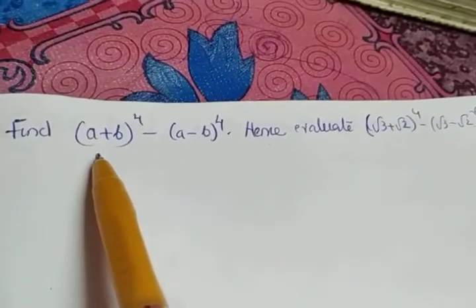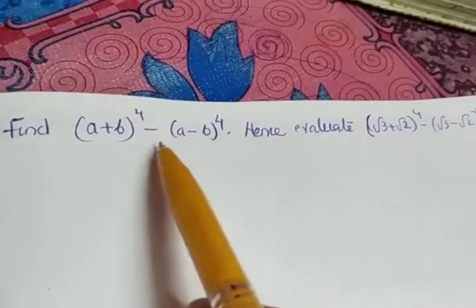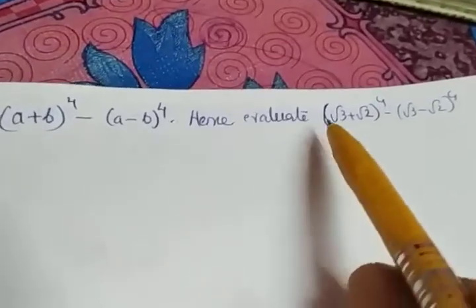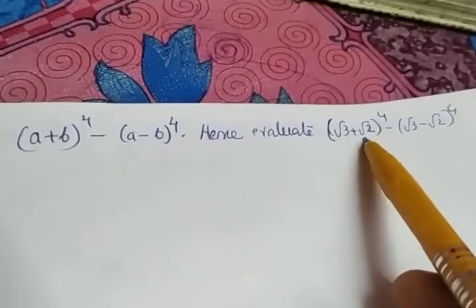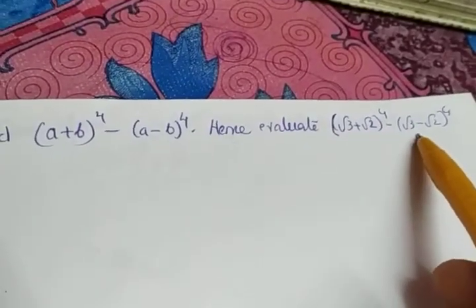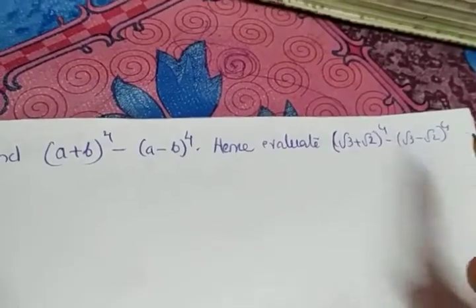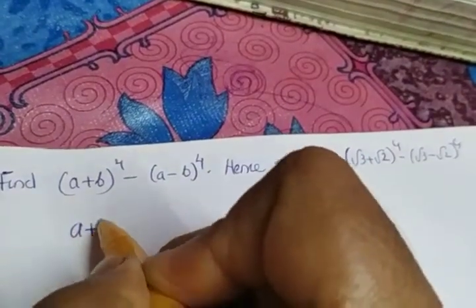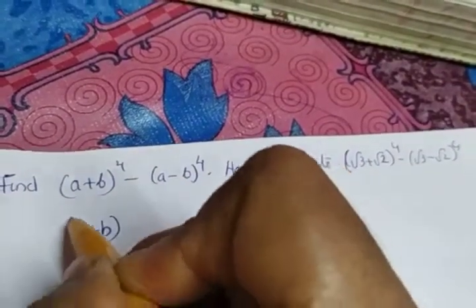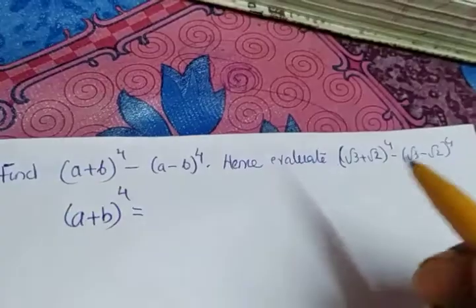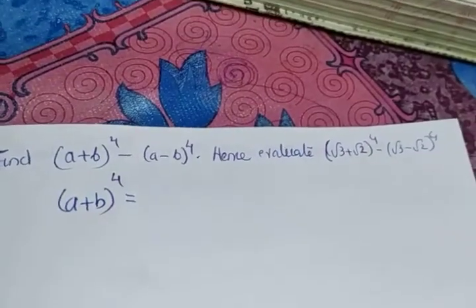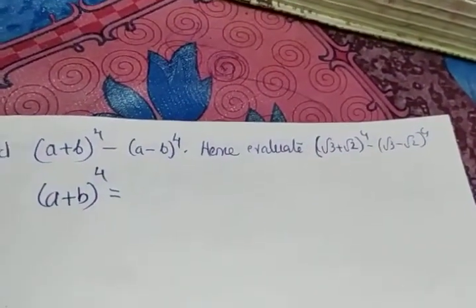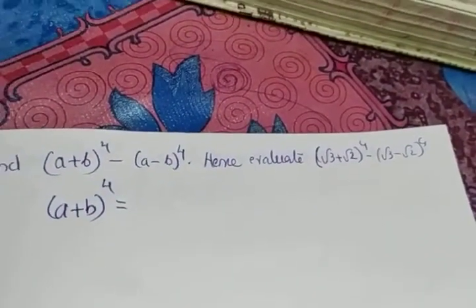Next question: find (a + b) whole raised to 4 minus (a - b) whole raised to 4. Hence, evaluate (√3 + √2) whole raised to 4 minus (√3 - √2) whole raised to 4. First, we will find (a + b) whole raised to 4 by using binomial expansion. (a + b) whole raised to 4 contains 5 terms, because the power is raised to 4.